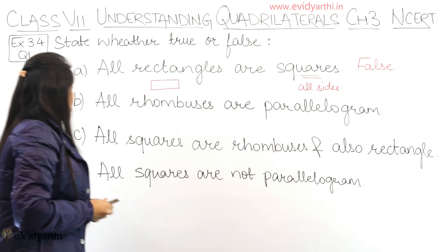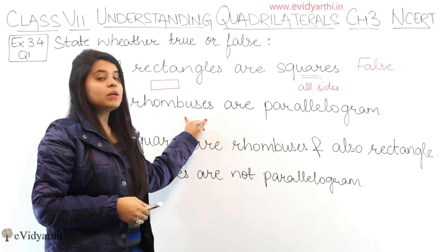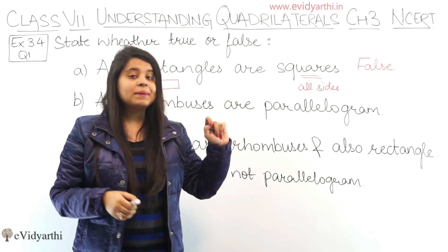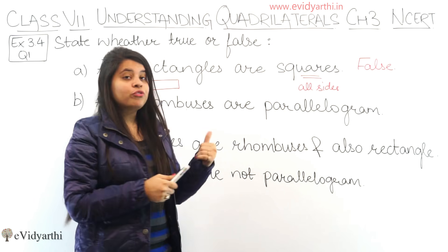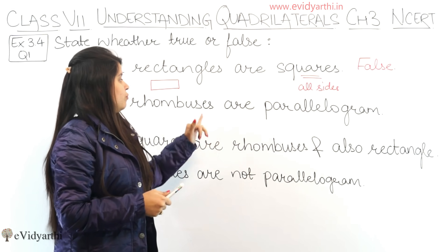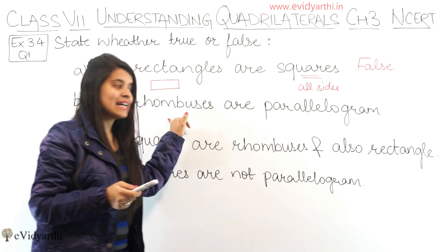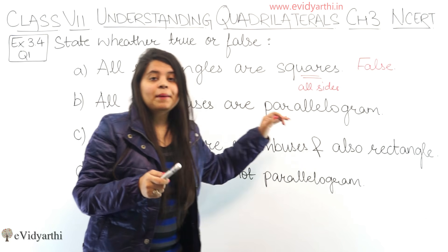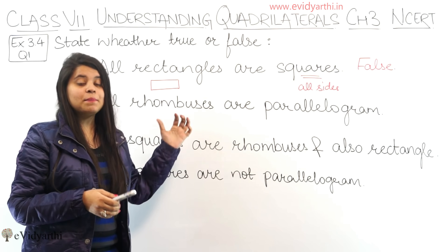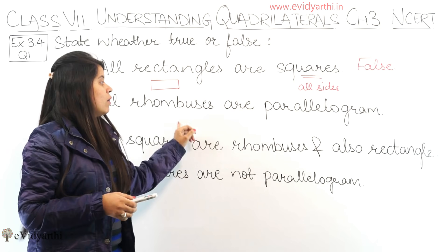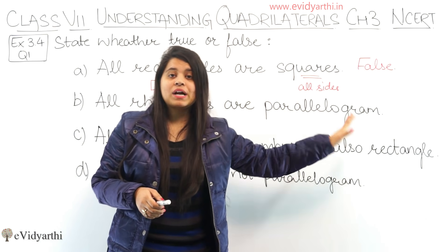Coming to the next one: all rhombuses are parallelograms. We need to check which properties of a parallelogram are fulfilled by a rhombus. In a parallelogram, opposite angles are equal — and in a rhombus, opposite angles are equal too. In a parallelogram, the diagonals bisect each other at the midpoint — and in a rhombus, the same is true. So yes, all rhombuses are parallelograms.